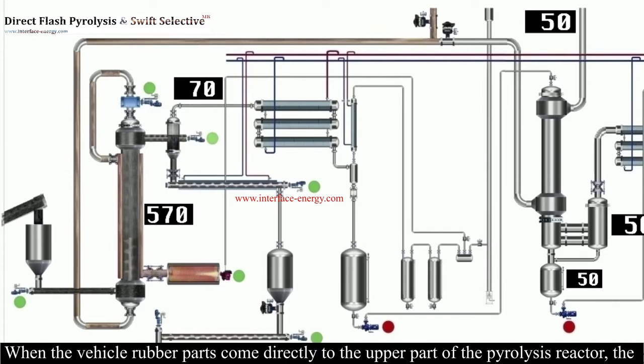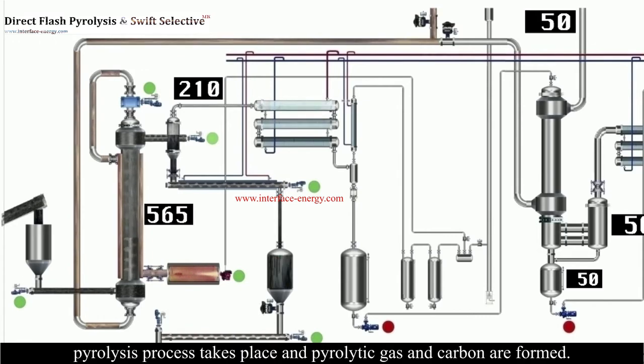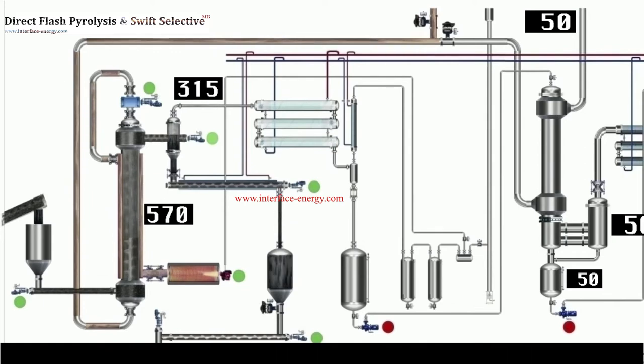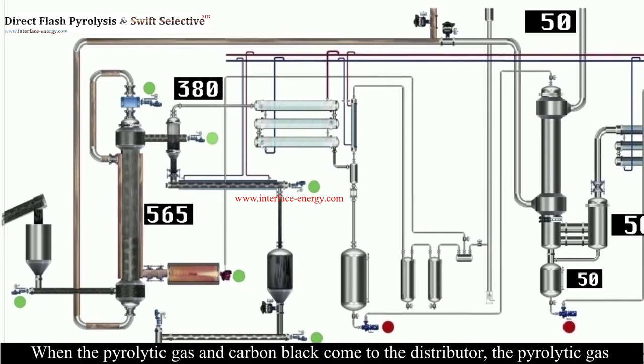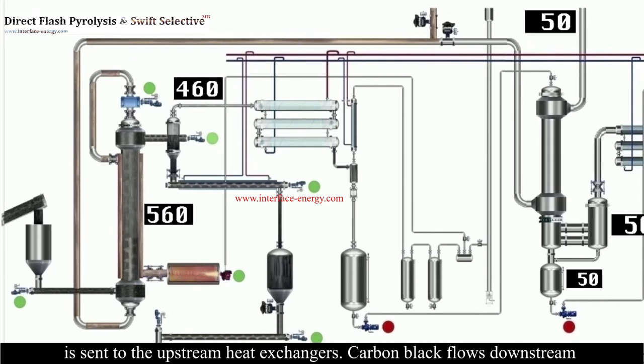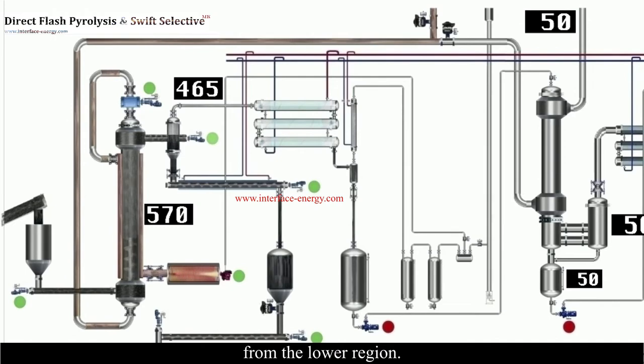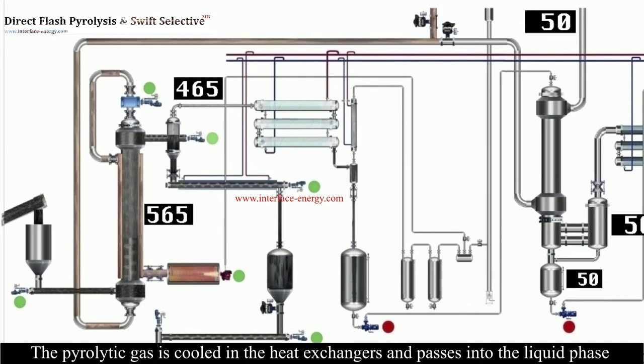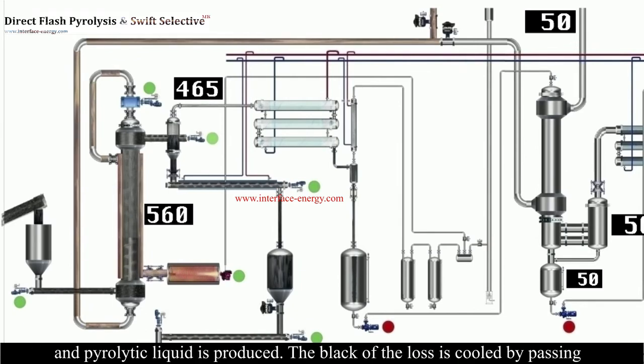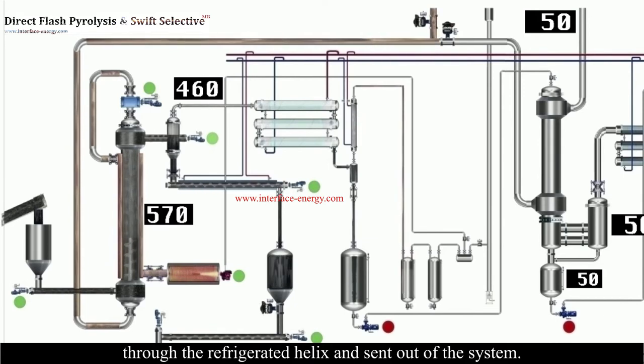When the vehicle rubber parts come directly to the upper part of the pyrolysis reactor, the pyrolysis process takes place and pyrolytic gas and carbon are formed. When the pyrolytic gas and carbon black come to the distributor, the pyrolytic gas is sent to the upstream heat exchangers while carbon black flows downstream from the lower region. The pyrolytic gas is cooled in the heat exchangers and passes into the liquid phase, producing pyrolytic liquid. The carbon black is cooled by passing through the refrigerated helix and sent out of the system.